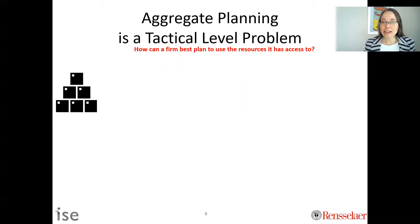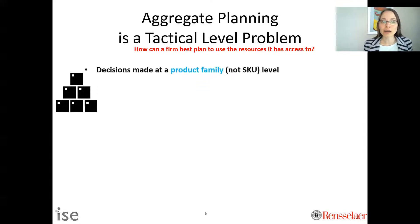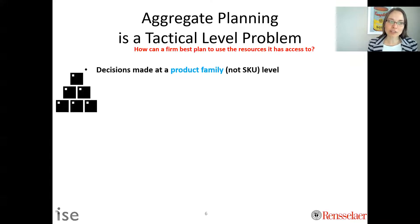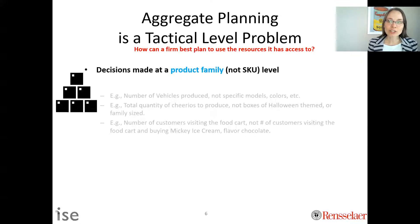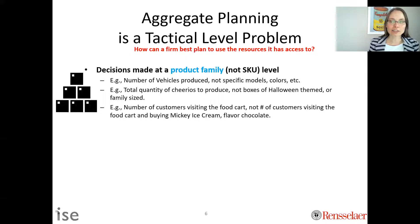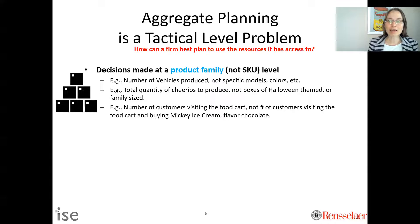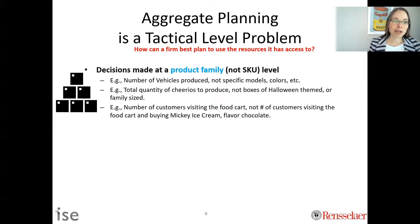The next idea is: at what level should the plan be? Typically at the aggregate planning level, decisions are made at the product family level, not at the individual SKU level. For example, in manufacturing three months out, I might plan how many vehicles I produce in June, but I'm not going to specify how many red vehicles or vehicles with different features — that would be at the product level, not the SKU level.